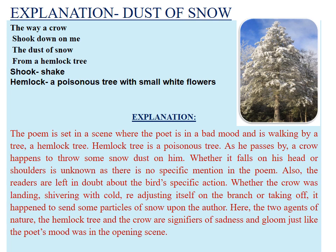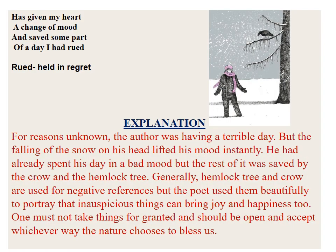Here, the two agents of nature — the hemlock tree and the crow — are signifiers of sadness and gloom, just like the poet's mood in the opening scene. For reasons unknown, the poet was having a terrible day. But the falling of the snow on his head lifted his mood instantly. He had already spent most of his day, but the rest of it was saved by the crow and the hemlock tree. Generally, hemlock tree and crow are used for negative references, but the poet used them beautifully to portray that inauspicious things can bring joy and happiness too.